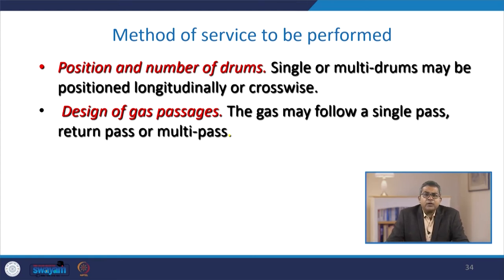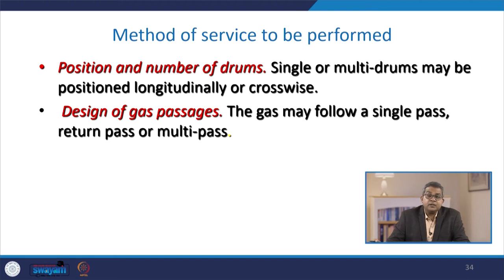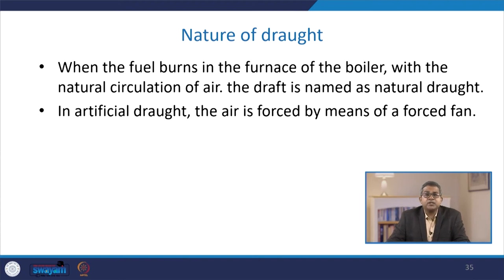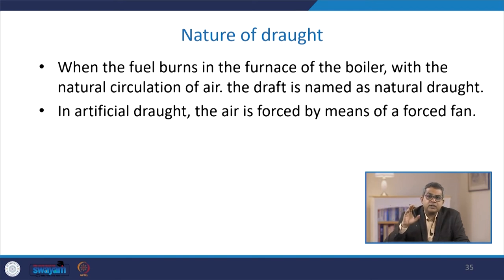Another classification is based on the position and number of drums — either single or multi-drum, positioned longitudinally or crosswise. Another classification scheme is based on the design of gas passage: the gas may follow a single pass, return pass, or multi-pass. One more classification is based on the nature of draft. When fuel burns in the furnace with natural circulation of air, the draft is named as natural draft. In artificial draft, air is forced by means of a fan requiring a mechanical approach.